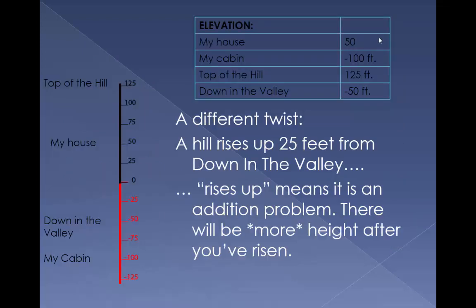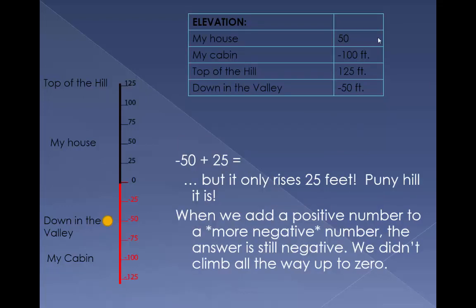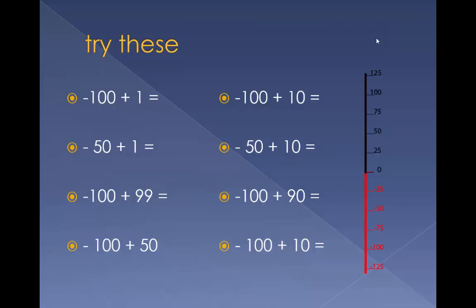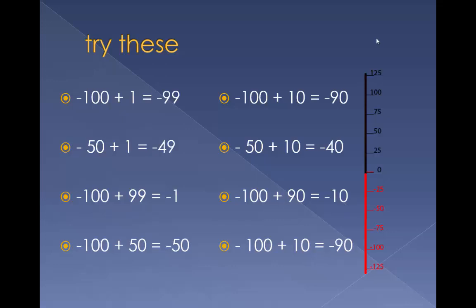Here's a different twist. A hill rises up 25 feet from down in the valley — it's still an addition problem; there will be more height after you've risen. Negative 50 plus 25, but it only rises 25 feet — puny hill it is. If I add a positive number to a more negative number, the answer's still negative. We didn't climb all the way to zero. Try these: pause, do them, and then click for the answer. Here they are.